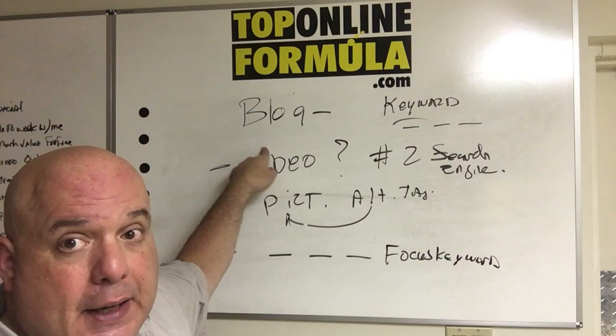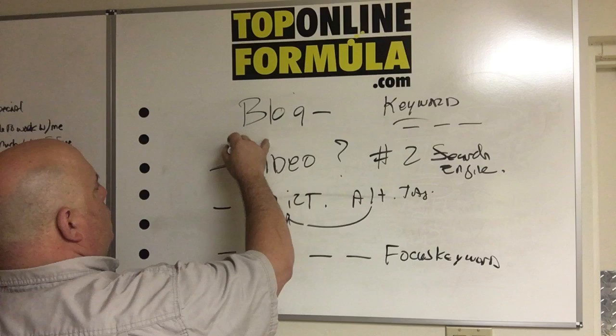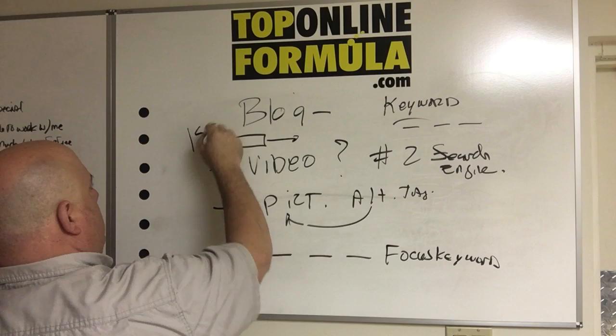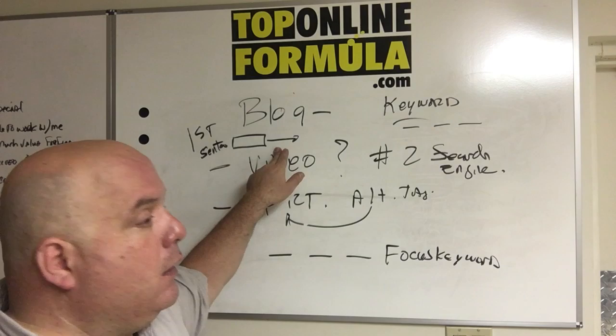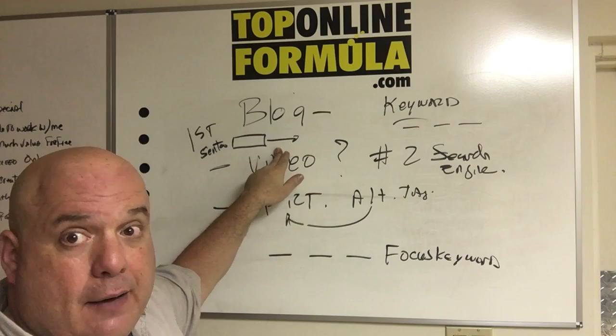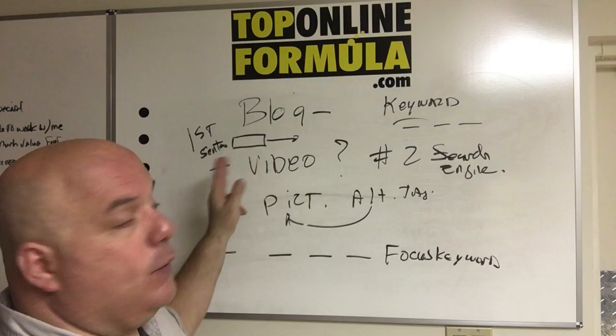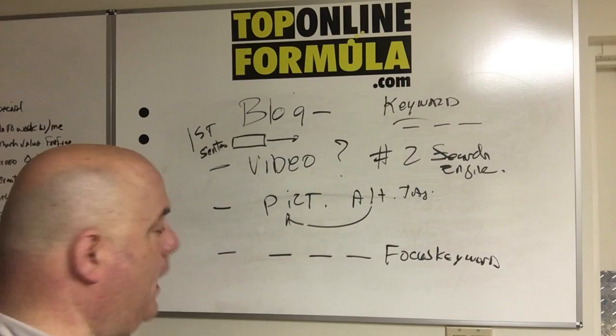When you start out with your first post, you want to have your long-tail keyword in the first sentence. So you'd be like, 'Hey, welcome to this 1955 Chevy classic car restoration' — that was my keyword — 'and we're going to go over everything we did in this.' Then you continue on your story and make it sound nice.